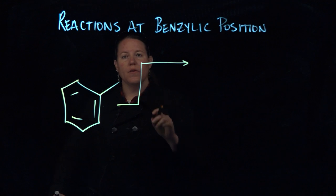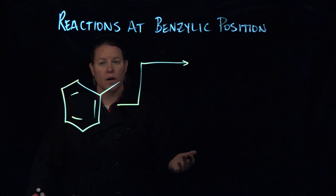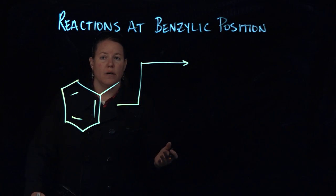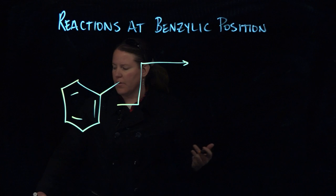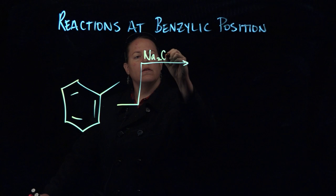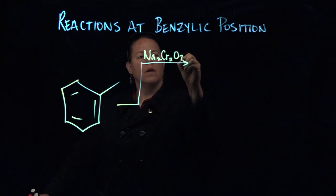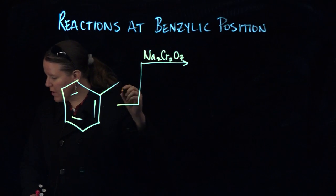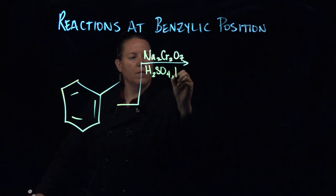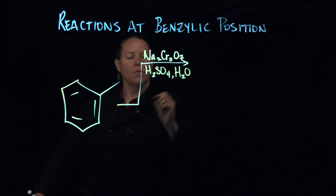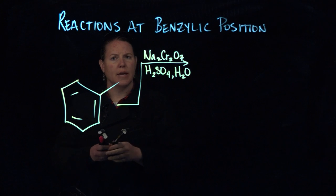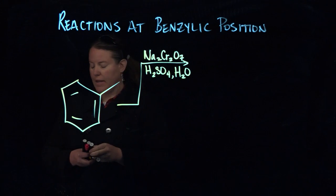You can oxidize using potassium permanganate or sodium dichromate. I'm going to use sodium dichromate. Remember that if you use the dichromate, you basically put all of this in the same flask.